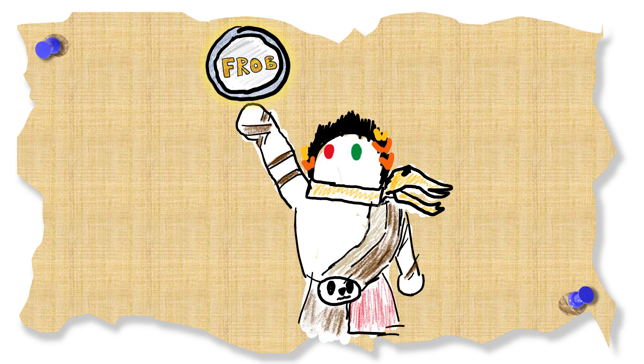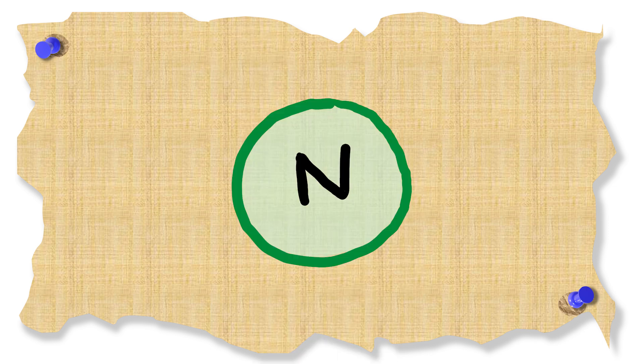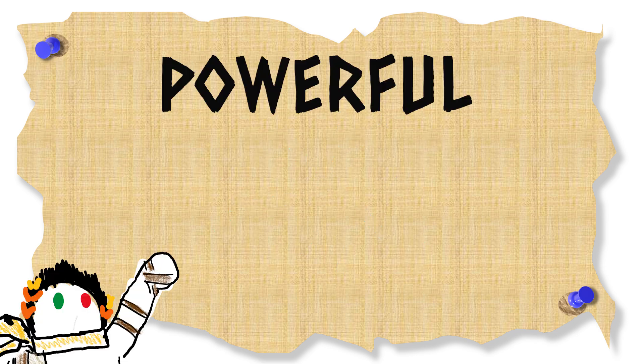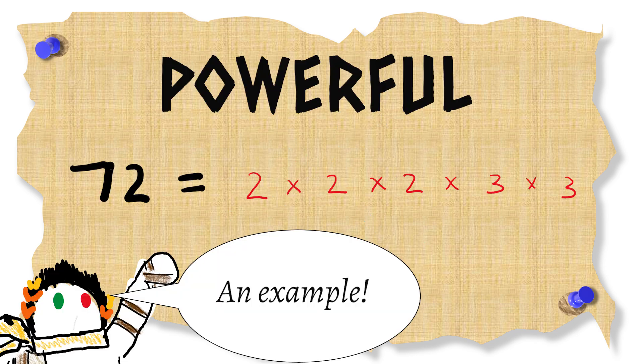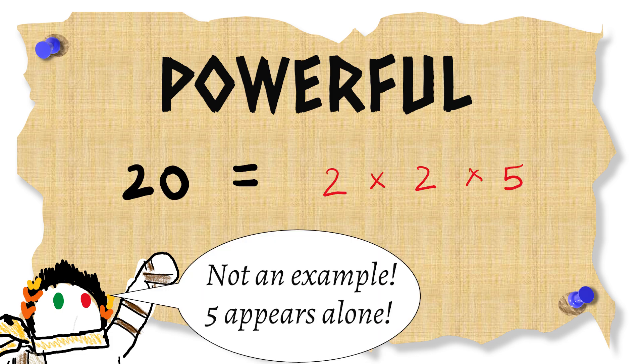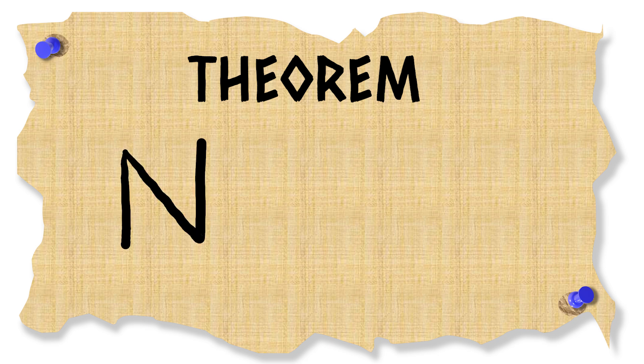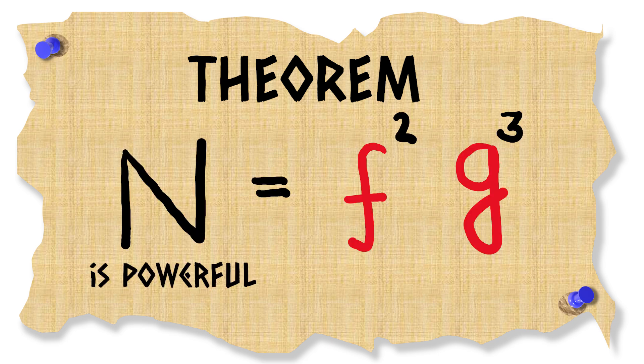Now let's use this theorem for our own nefarious purposes. Given a number we can find its prime factorization. We call a number powerful if each prime factor appears more than once in the factorization. Which means that the power of each prime factor are at least 2. The theorem says if n is a powerful number then we can write it as f squared times g cubed for some numbers f and g.